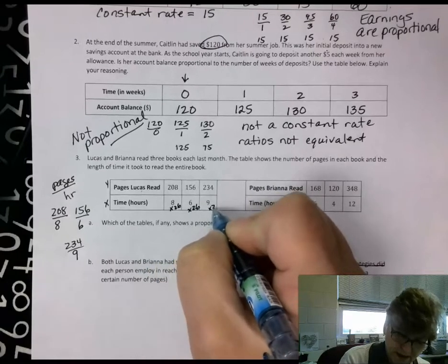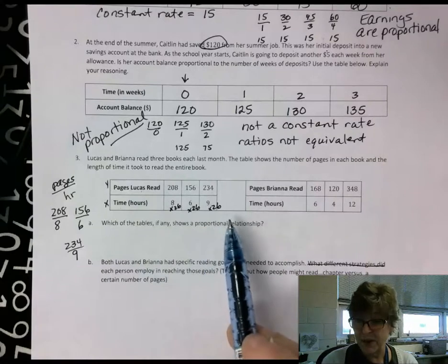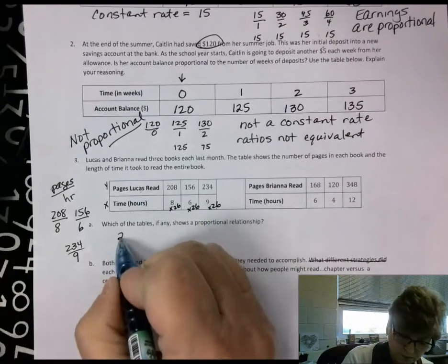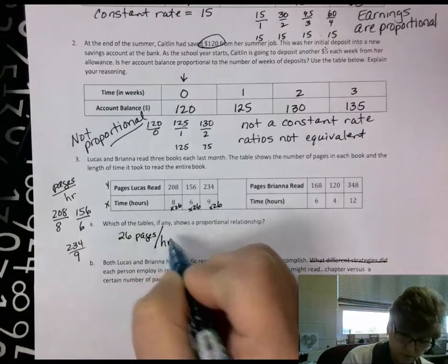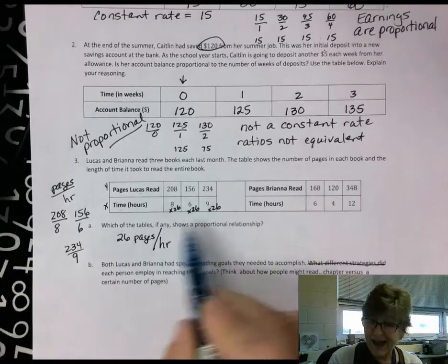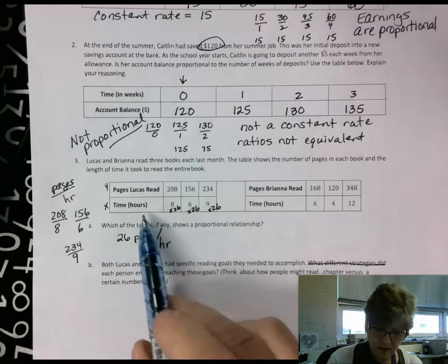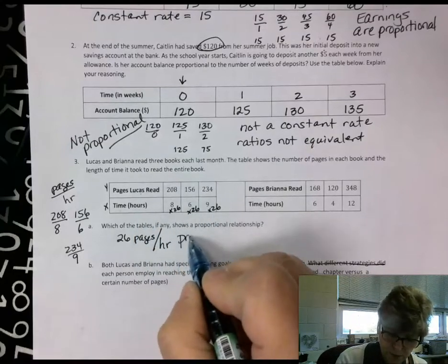So that means actually 26 pages were read every hour. Therefore, that has a constant rate. So Lucas's reading was at a constant rate and it is proportional.